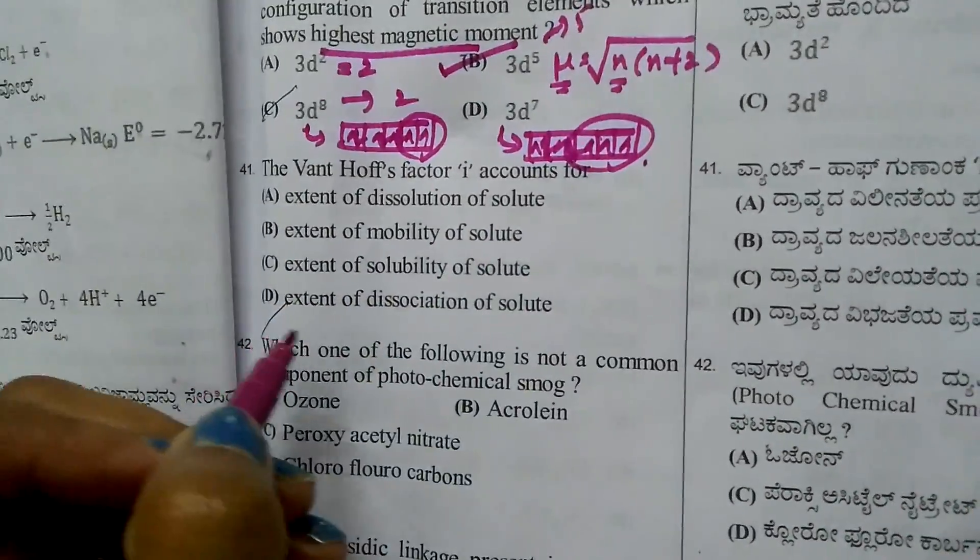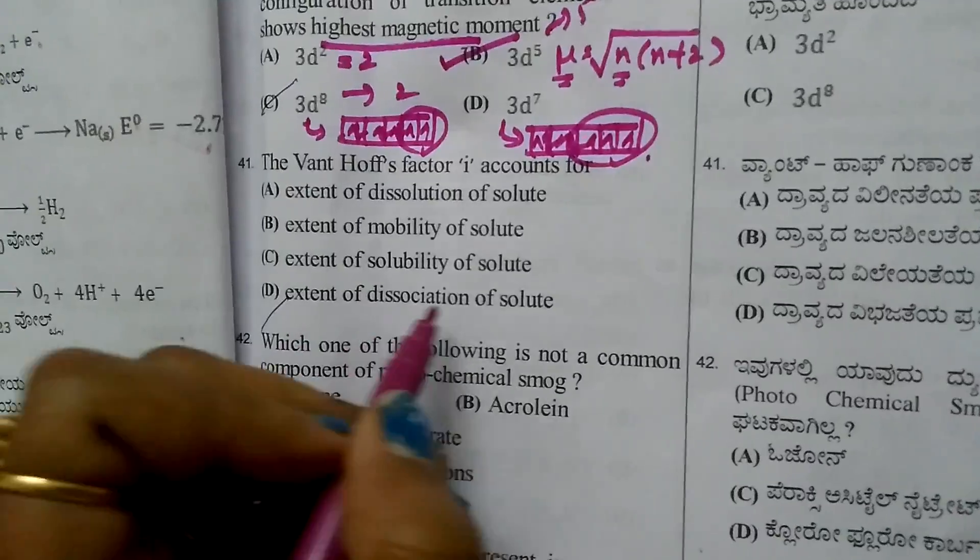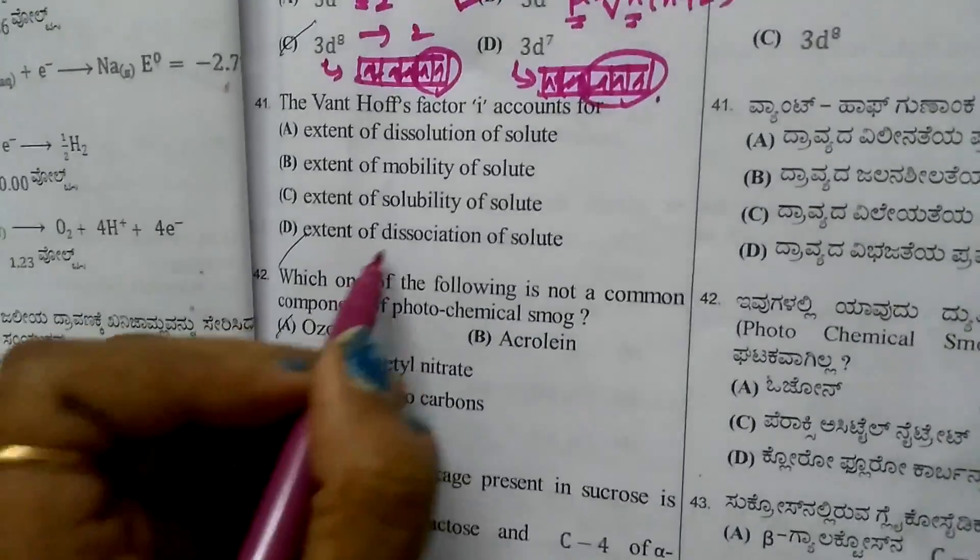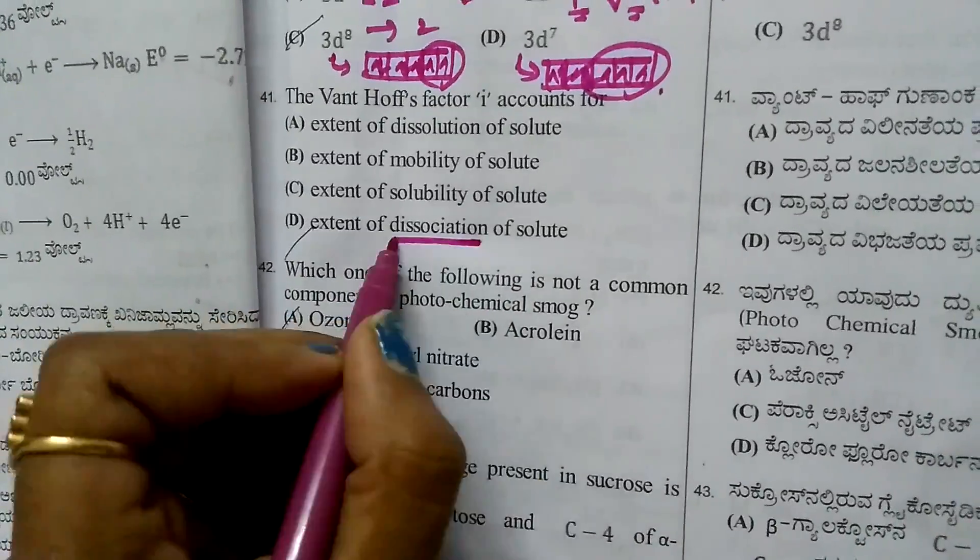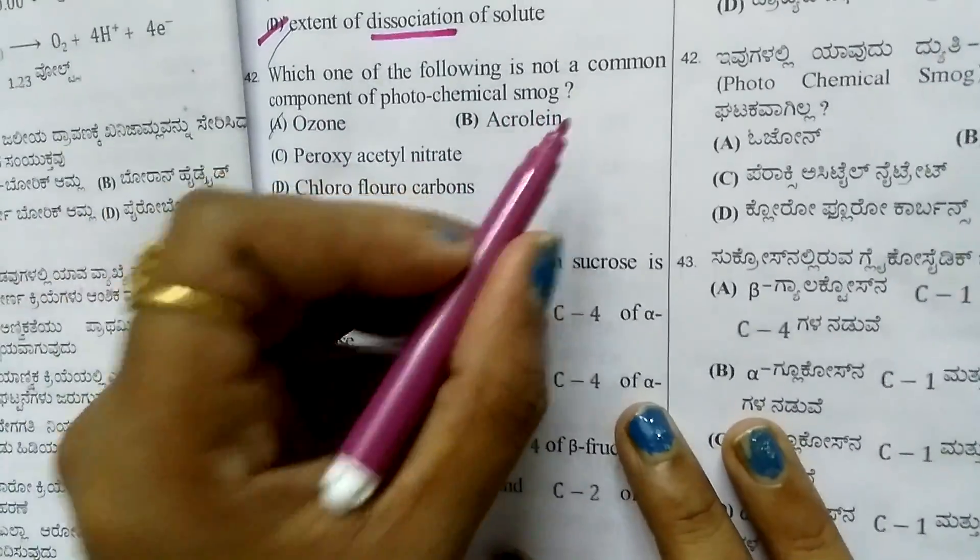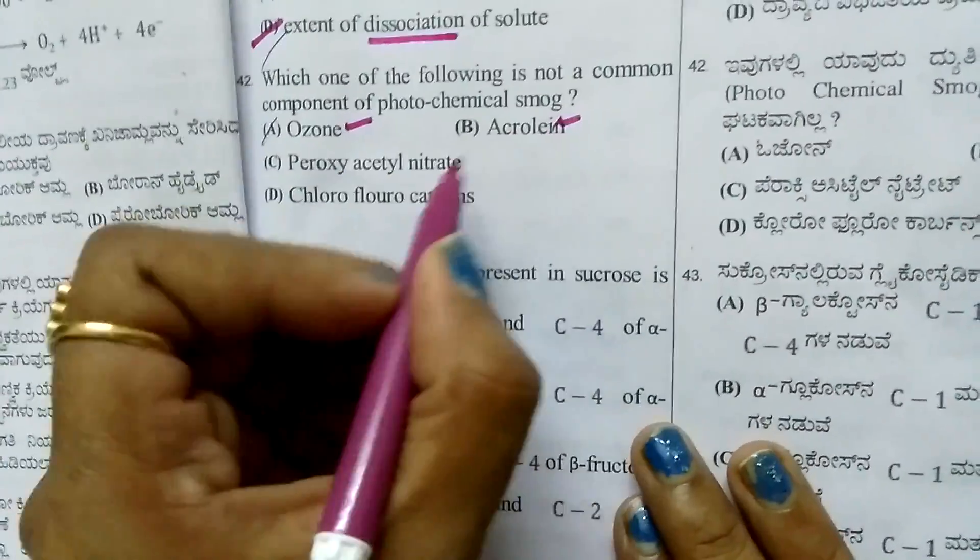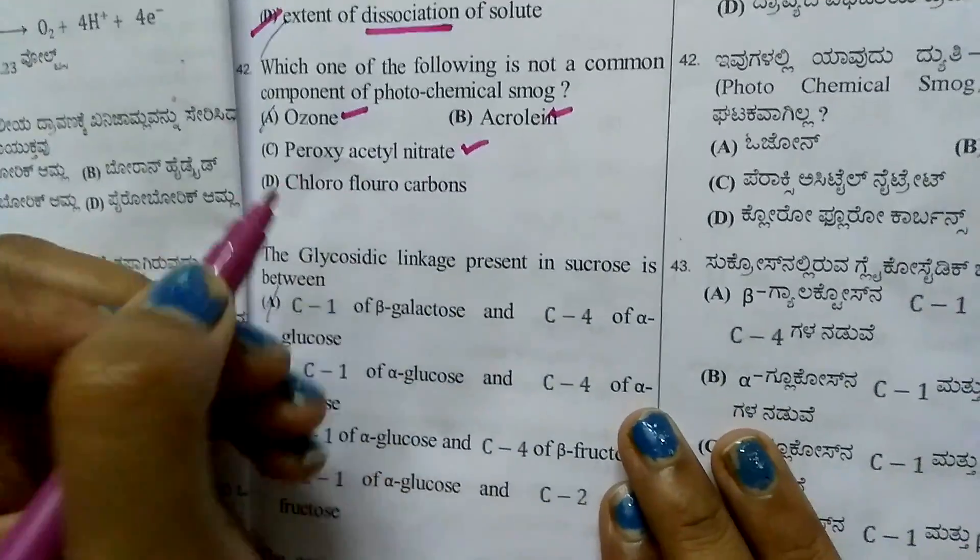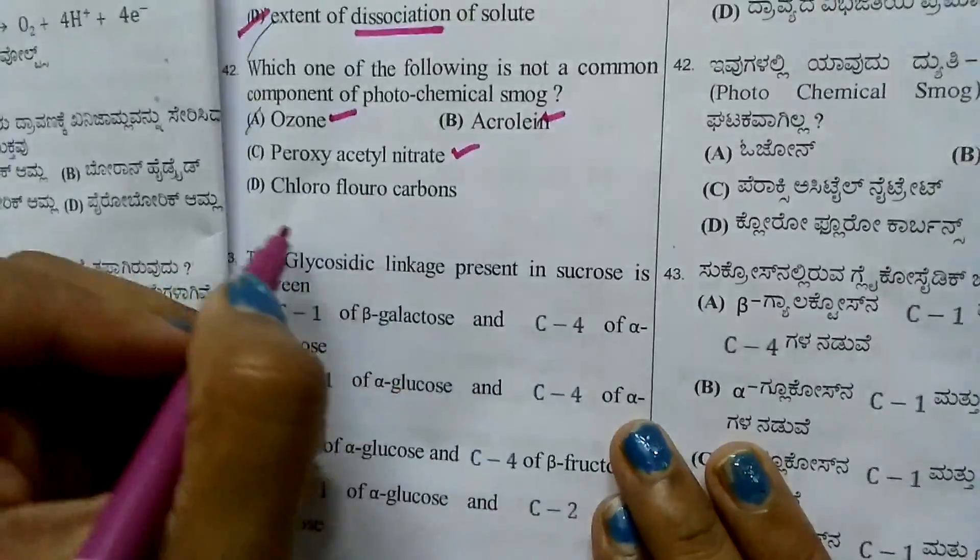Question 40: Van't Hoff factor i accounts for extent of dissociation or association of the solute. Question 41: Which is not a common component of photochemical smog? Ozone, acrolein, and peroxyacetyl nitrate are common components. Chlorofluorocarbons are not a common component of photochemical smog.